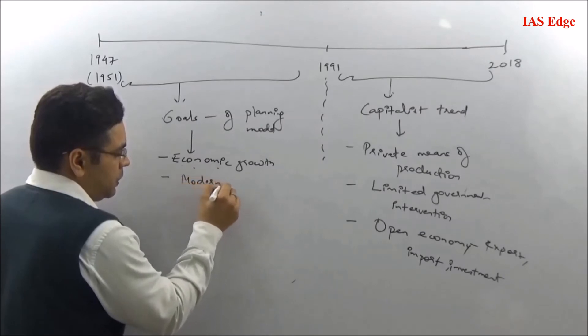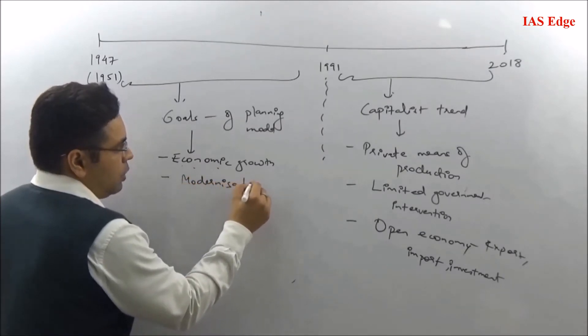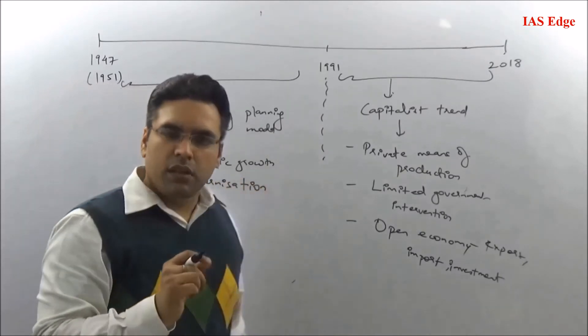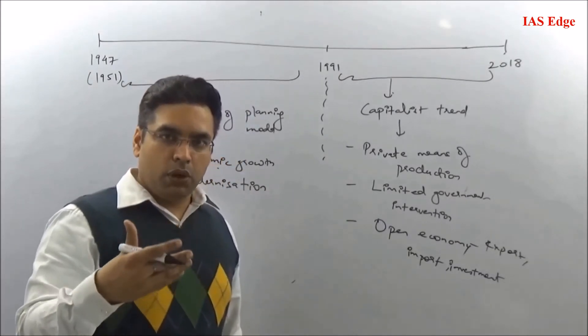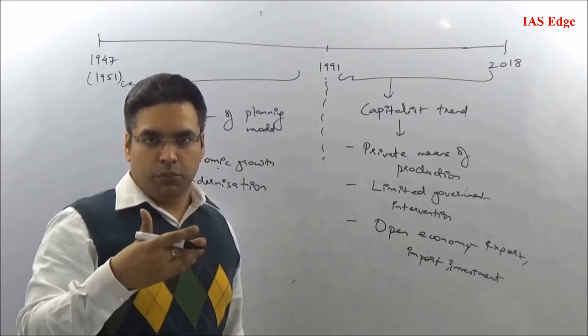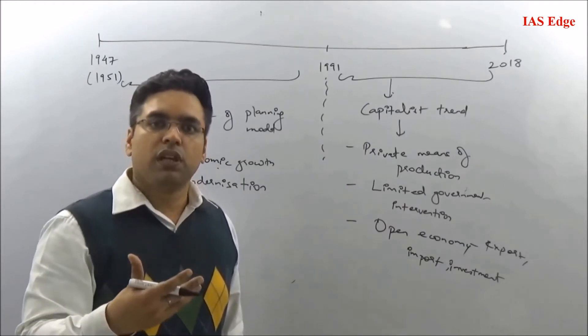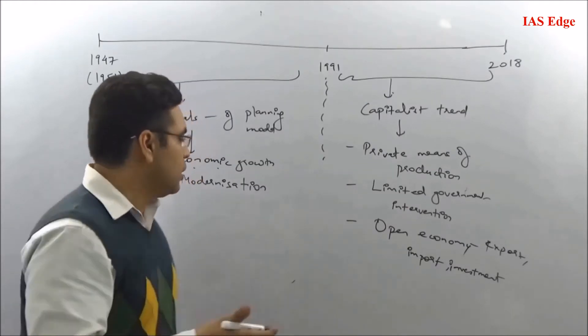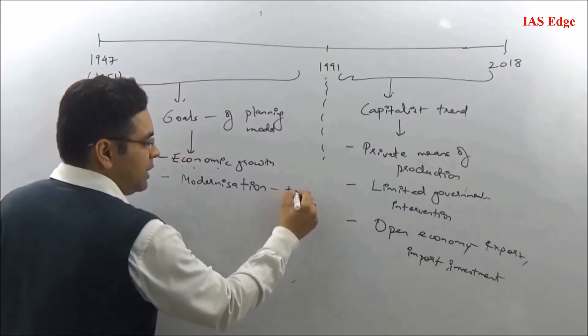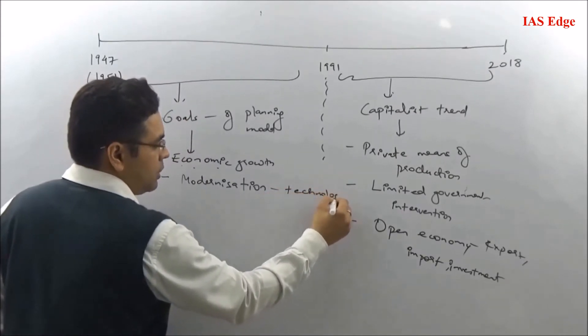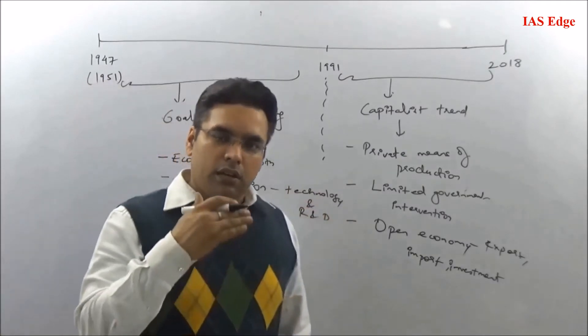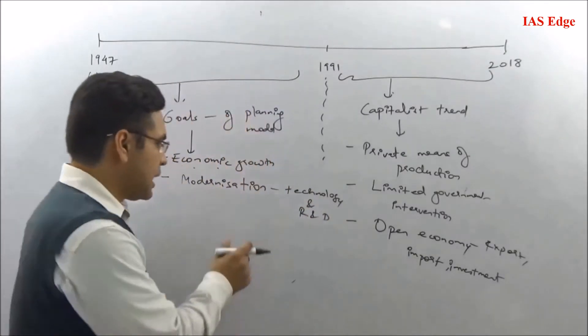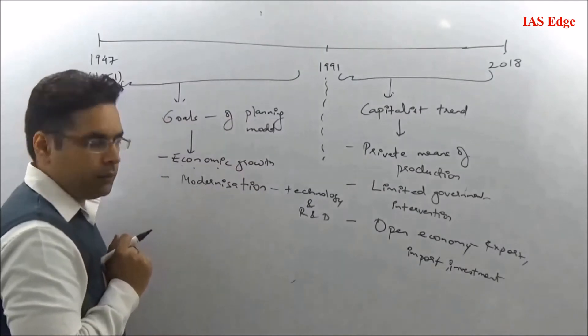The second goal was modernization, which means advancement in terms of technology. India was an economy where technological evolution was very low. We were not industrialized, so we tried to increase our capacity through technology, research and development, and match the developed countries.